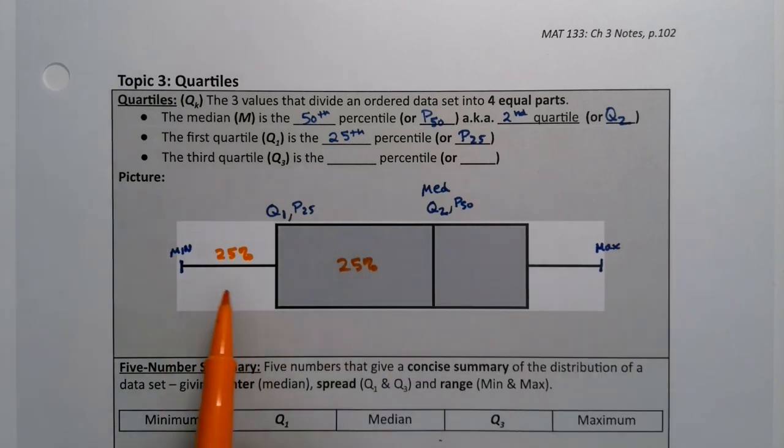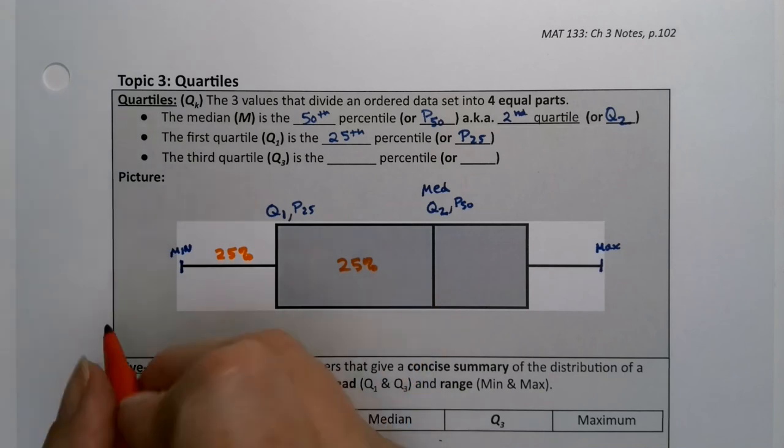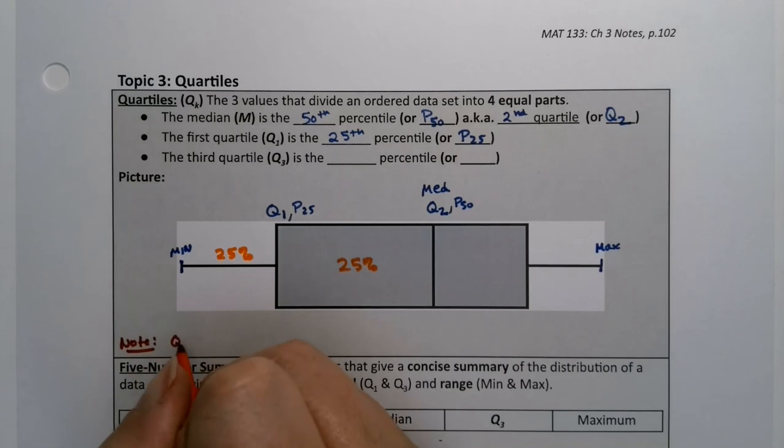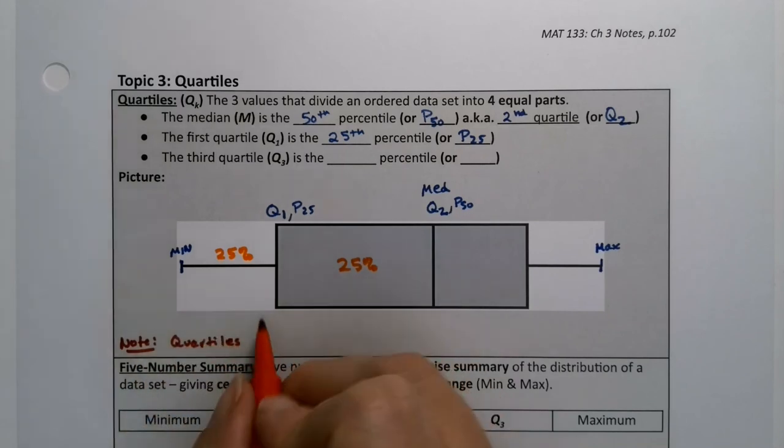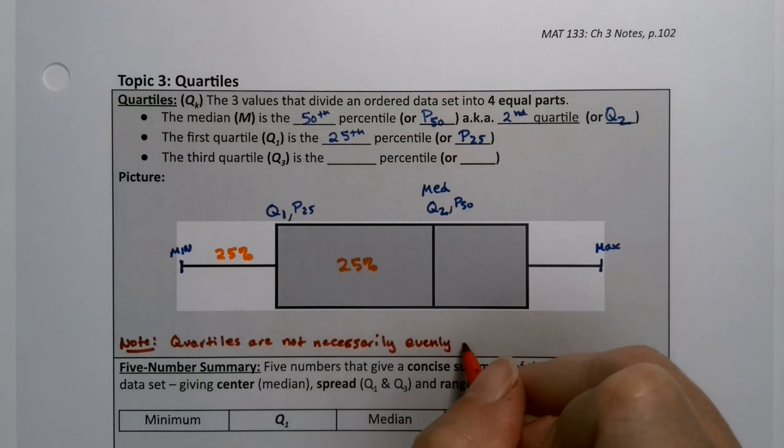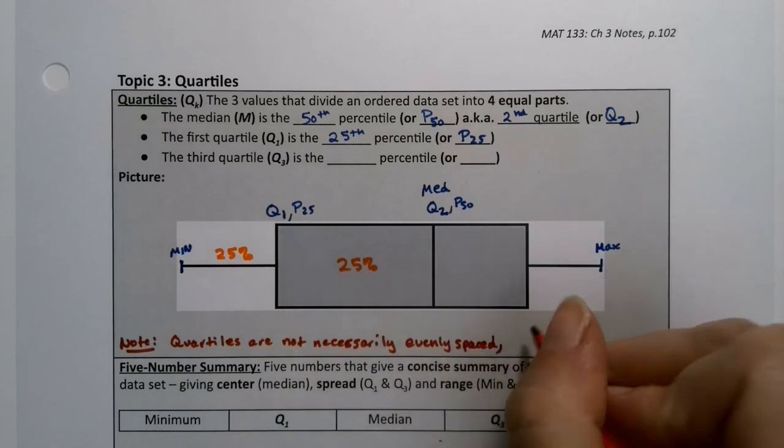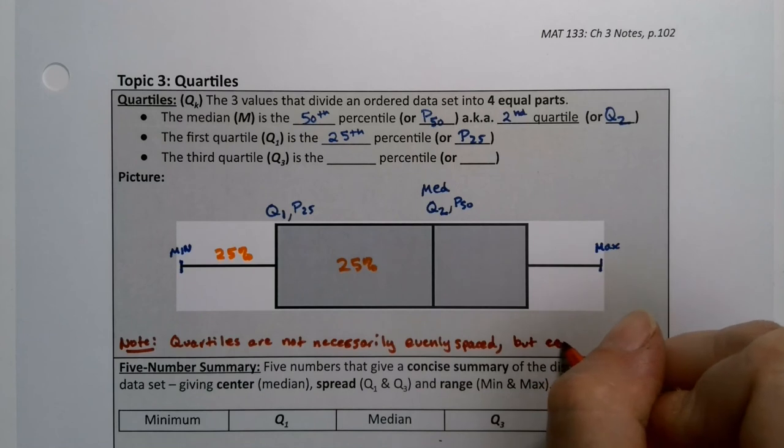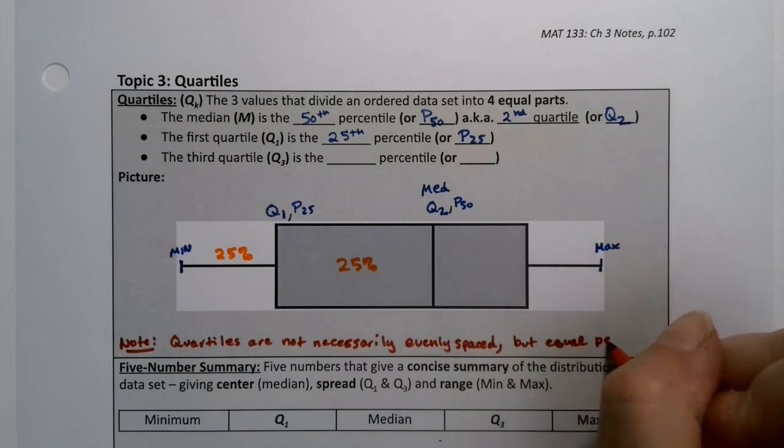Now you'll notice they're not equal width, but they're equal percentages. That's key. Just like with the percentiles, right? They're not equally spaced. They're equally proportioned in terms of the percentage that's in each section. So we'll make a note right here. Quartiles are not evenly spaced. I mean, they can be, but it's not necessarily evenly spaced. What they have is an even percentage, right? But they have equal percentage, in this case, 25% in each section.